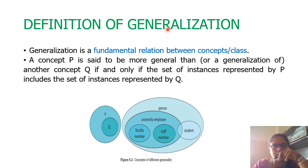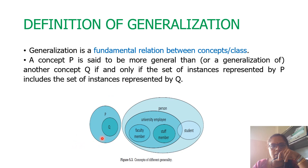Why is ontology required? It is mainly for the purpose of generalization. Generalization gives you the relationship between concepts. If I have a set P and a set Q, and Q is a subset of P, we can consider P as a concept and Q as yet another concept. We say P is more general than Q — in other words, Q is more specialized than P. A concept P is said to be a generalization of another concept Q if and only if the set of instances represented by P also includes the set of instances represented by Q.